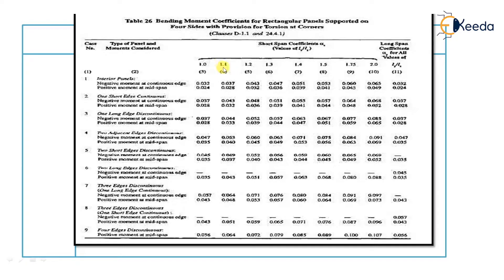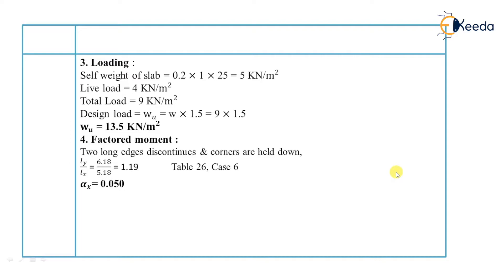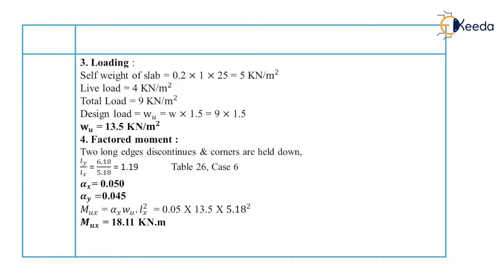After interpolating, we find the bending moment coefficient in the X direction, alpha X, and alpha Y. The values are 0.035 and 0.045; we take the maximum value, so alpha Y equals 0.045. After interpolating, alpha X equals 0.050. Therefore, MUX (moment in X direction) equals alpha X × WU × LX² = 18.11 kN·m. Similarly, MUY equals alpha Y × WU × LX² = 16.30 kN·m.